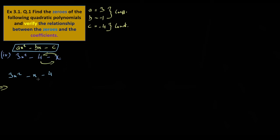3x squared minus x minus 4. 3 times 4 is 12. Multiply, it's negative. So minus 12. We need to split this.